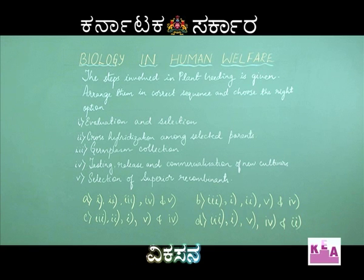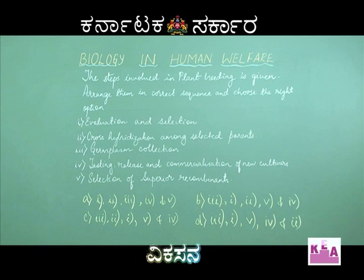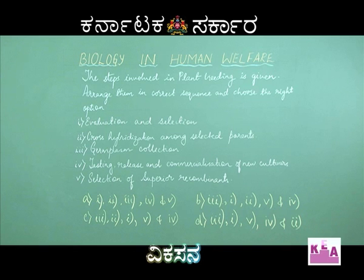The steps given are in a random fashion. The first being evaluation and selection, the second is cross hybridization among selected parents, the third is germplasm collection, the fourth is testing, release and commercialization of the new cultivars, and the fifth is selection of superior recombinants.